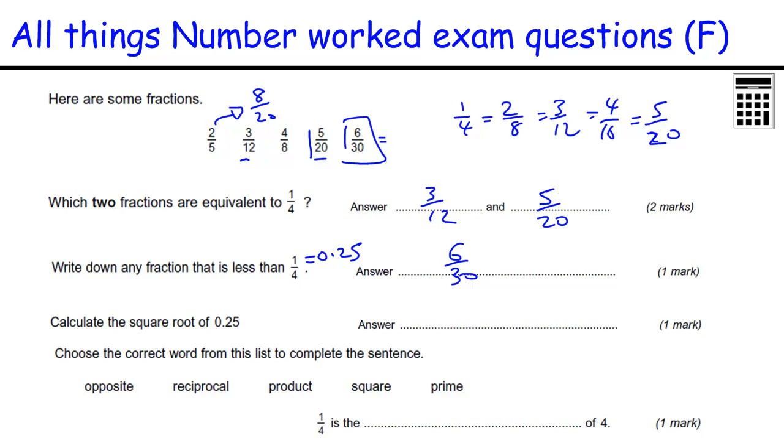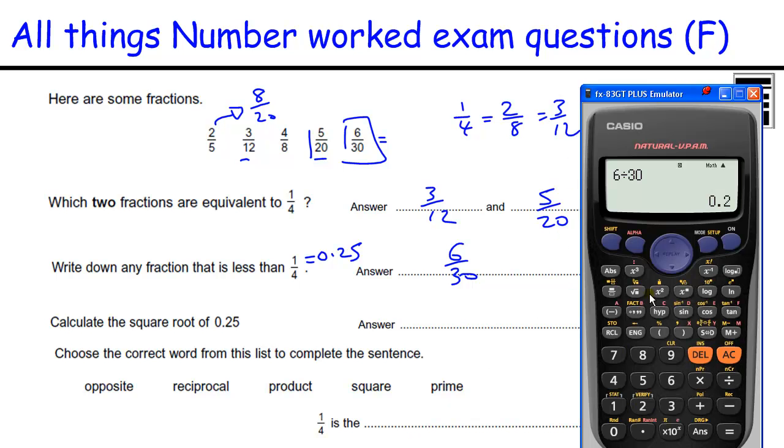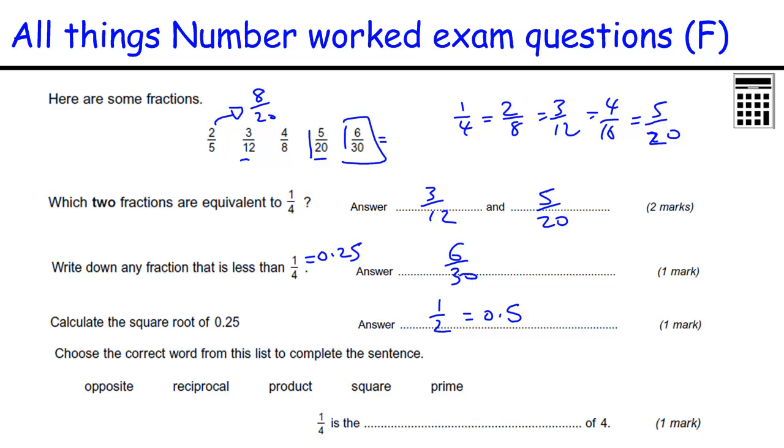Calculate the square root of 0.25. So the square root of 0.25 equals a half, or 0.5. Choose the correct word. A quarter is something of 4. Well, that is a reciprocal. Reciprocal, for a fraction, you turn the fraction upside down, and 4 divided by 1 is 4. For a whole number, the reciprocal of 7 would be 1 divided by 7.